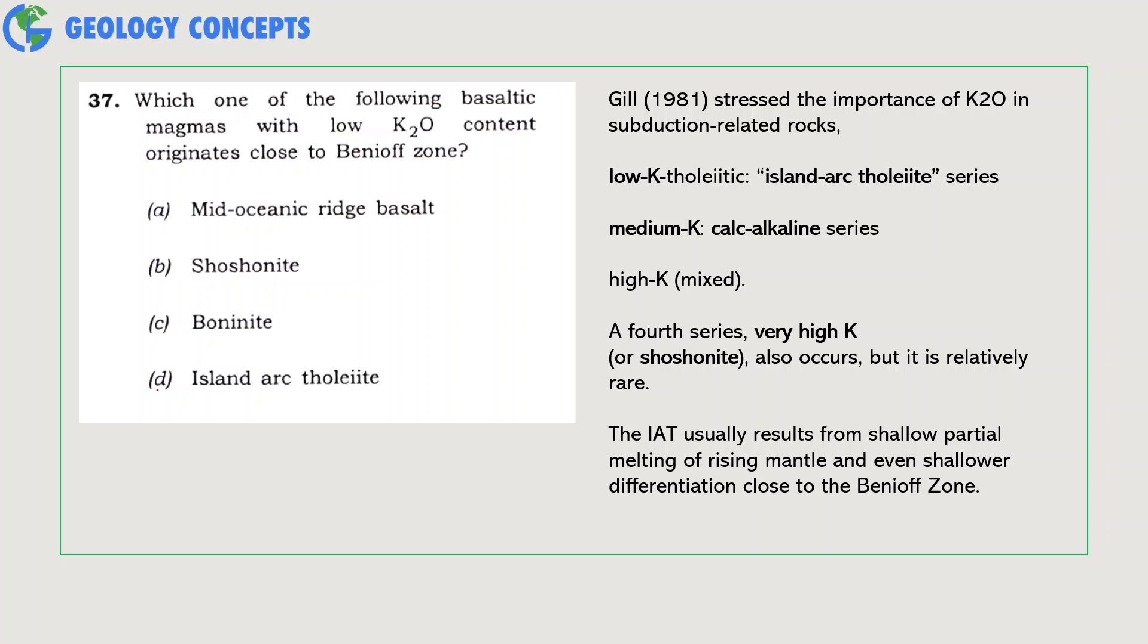Boninite is an extrusive rock high in magnesium and silica, usually formed in fore-arc basin environments typically during the early stage of subduction. They show variable enrichment in mobile fluid phases such as rubidium, barium, and potassium.